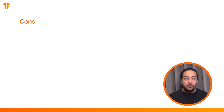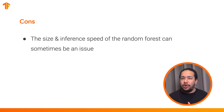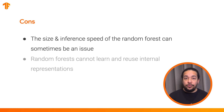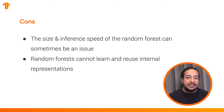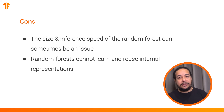The cons are: first, because the decision trees are not pruned, they can be large — models with more than 1 million nodes are common. The size and inference speed of random forests can sometimes be an issue. And second, random forests cannot learn and reuse internal representations. Each decision tree, and each branch of each decision tree, must relearn the dataset pattern. In some datasets, like non-tabular datasets such as images or text, this leads random forests to worse results than other methods.